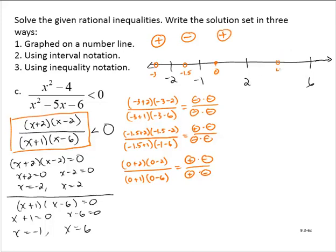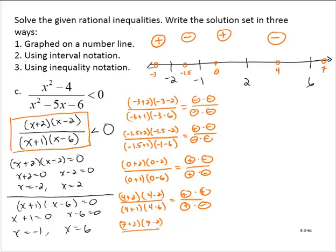Testing between 2 and 6, how about x equals 4? 4 plus 2 times 4 minus 2 over 4 plus 1 times 4 minus 6: positive, positive, positive, negative — one negative — giving a negative result. Testing a number greater than 6, how about 7? All four factors are positive, giving a positive result. We wanted this to be less than 0, so we shade wherever the testing came back negative.